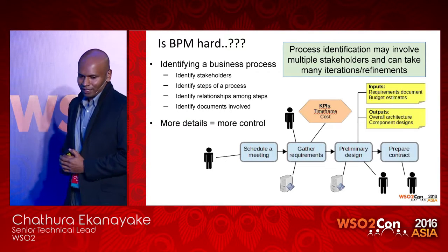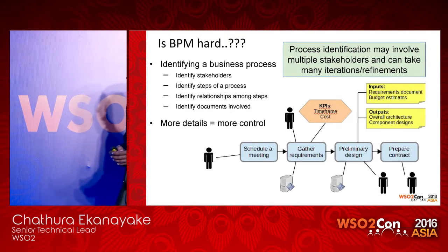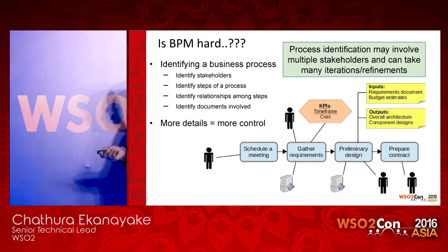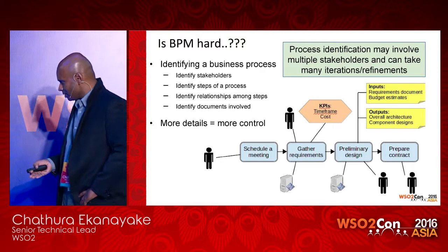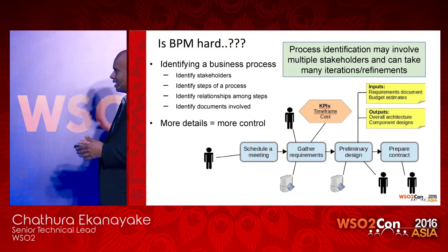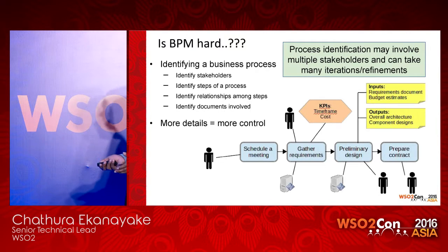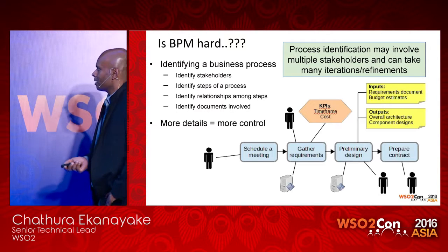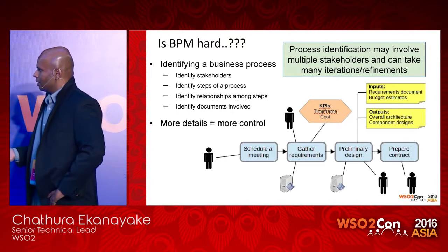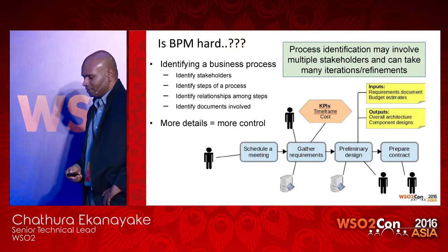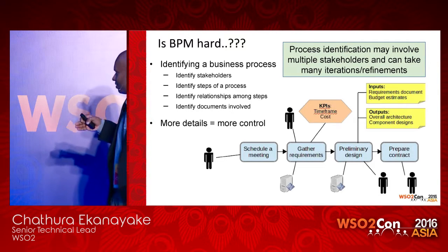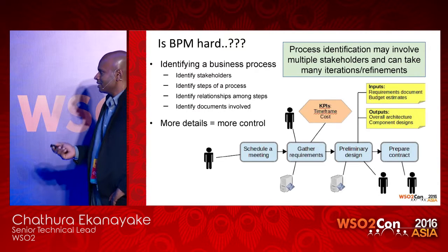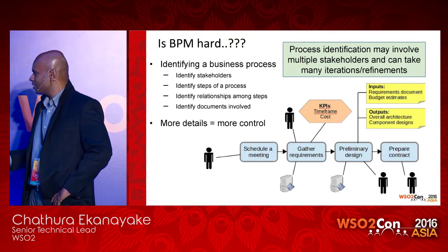Another barrier is that in any given process, there are large amounts of detail. For example, we have to identify multiple steps, and each step can be further divided into more sub-steps, resulting in a large number of steps overall. For each step, we must identify stakeholders and resources. We also have to identify the relationships among these steps. If we want to gain more control over our processes, we have to capture more details, and that is not an easy task.